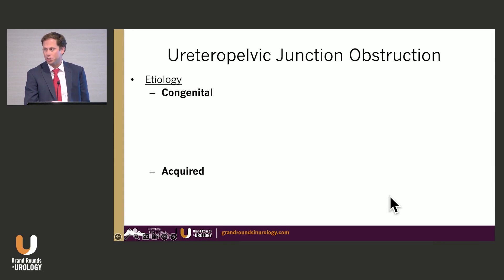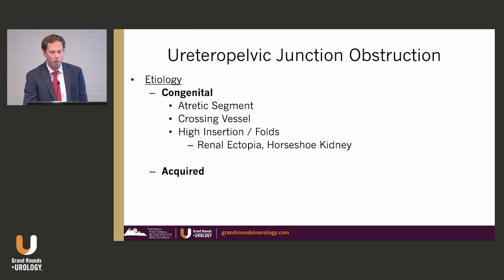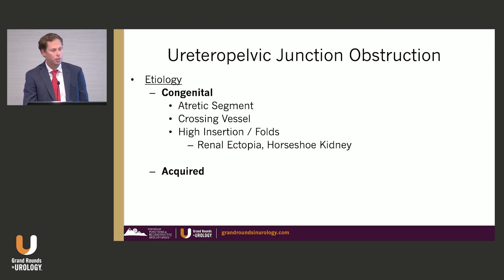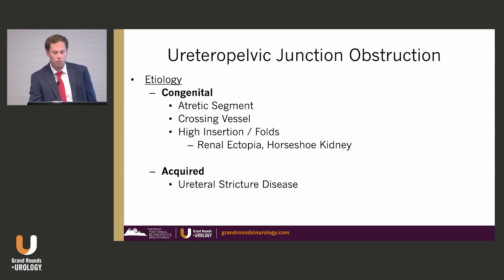Classically, ureteropelvic junction obstruction can be defined as congenital or acquired. For congenital, we have atretic segments — we don't really know exactly why these form histopathologically. They look similar to primary megaureter in kids, where there's a fibrotic replacement of the musculature. Crossing vessels are anatomic variants from the renal artery or from the aorta, and there can also be high insertion or folds. These can be seen in anatomic variants such as renal ectopia or horseshoe kidney, although they can also occur in normally formed kidneys.